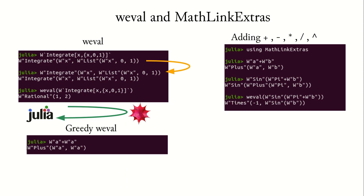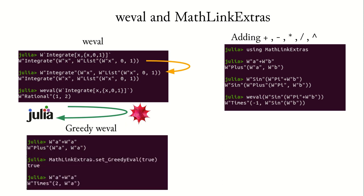There is one way to get automatic evaluation of the overloaded operators. Note here that W A plus W A really gives back plus A A. But if we set the greedy evaluator to true, then W A plus W A gets sent to Mathematica and retrieved, and we get two times W A.